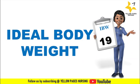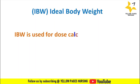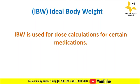Next comes ideal body weight. Ideal body weight is used for dose calculations for certain medications like analgesics such as ketamine, sedatives such as etomidate, and antipsychotics such as haloperidol. The ideal body weight and adjusted body weight are used to calculate medication dosages when the patient is obese.